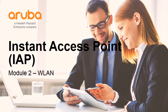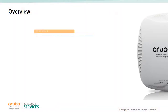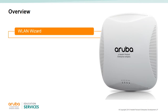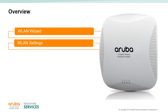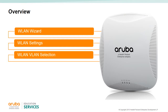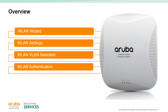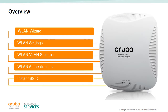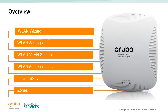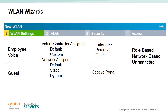Module 2: Aruba Instant Wireless LAN Configuration. In this module we will look at the wireless LAN wizard, the wireless LAN settings, the possible VLAN selections for each wireless LAN, the authentication for an instant SSID, and how to set up zones.